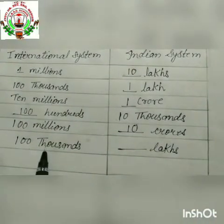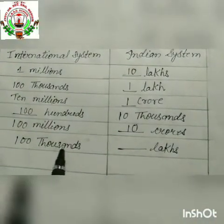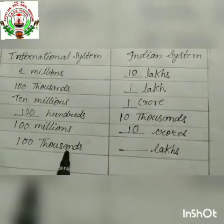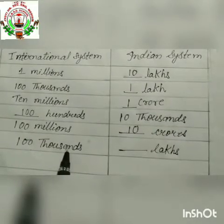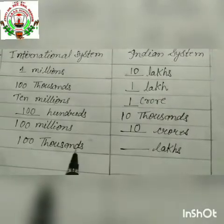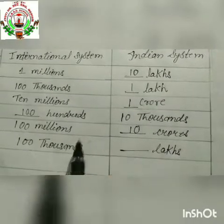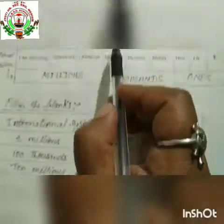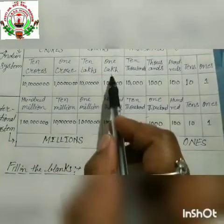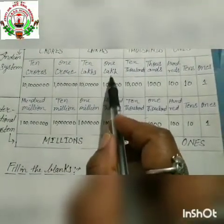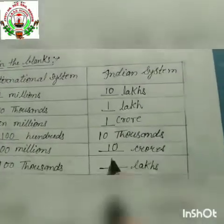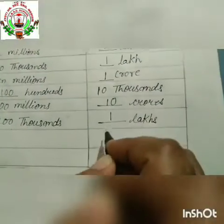Now in F, it is hundred thousand. Hundred thousand in the international system equals how many lakhs? Hundred thousand is equal to one lakh. So we write: one lakh.